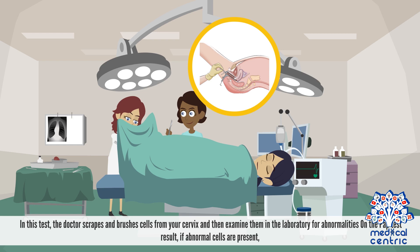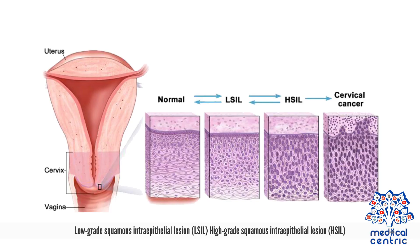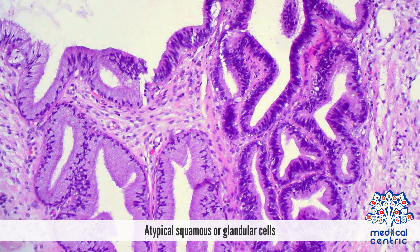On the pap test result, if abnormal cells are present, this will be reported as low-grade squamous intraepithelial lesion, or LSIL; high-grade squamous intraepithelial lesion, or HSIL; or atypical squamous or glandular cells.